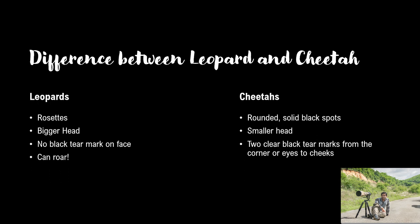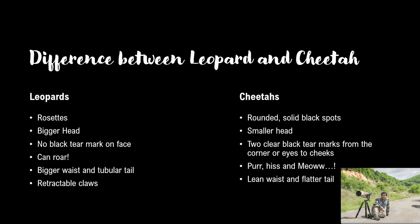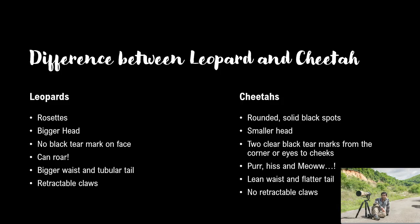Only big cats such as tigers, lions, leopards and jaguars can roar, thanks to an unfixed ligament instead of a fixed voice box. But cheetahs have a fixed structure, so like domestic cats, cheetahs can only purr and hiss. Leopards have a bigger waist and a tubular, long tail. Cheetahs, being the fastest four-legged animals, have an aerodynamically designed lean body and a longer, flatter tail. Last but not the least — leopards have retractable claws while cheetahs have fixed claws. You can see proper claw marks in the pugmarks of cheetahs, while leopards keep their claws retracted while walking on their toes.